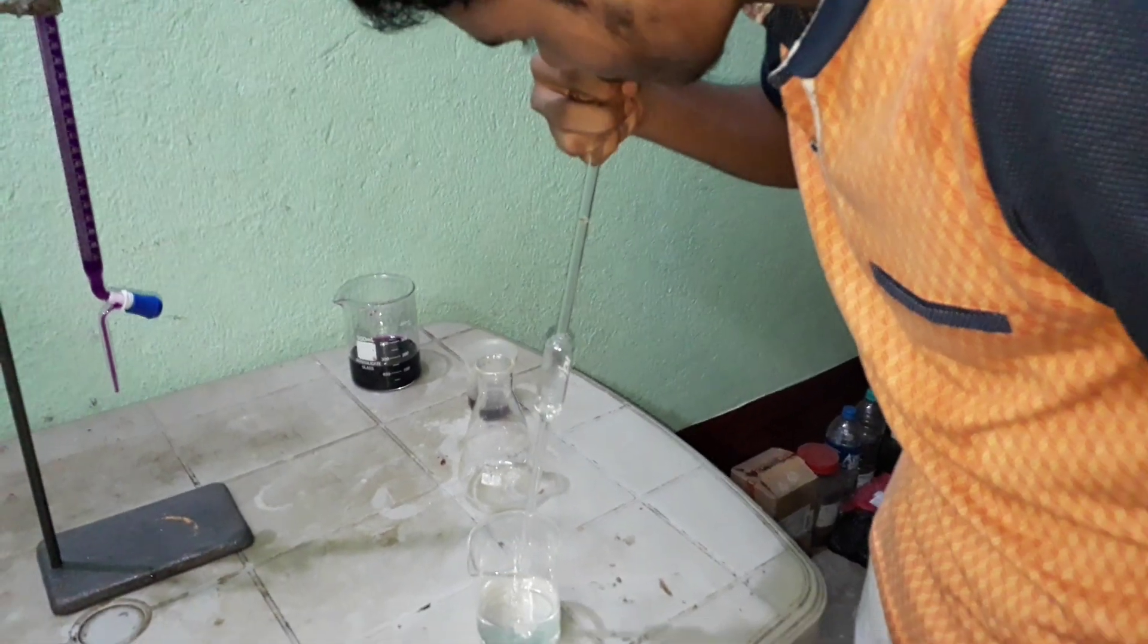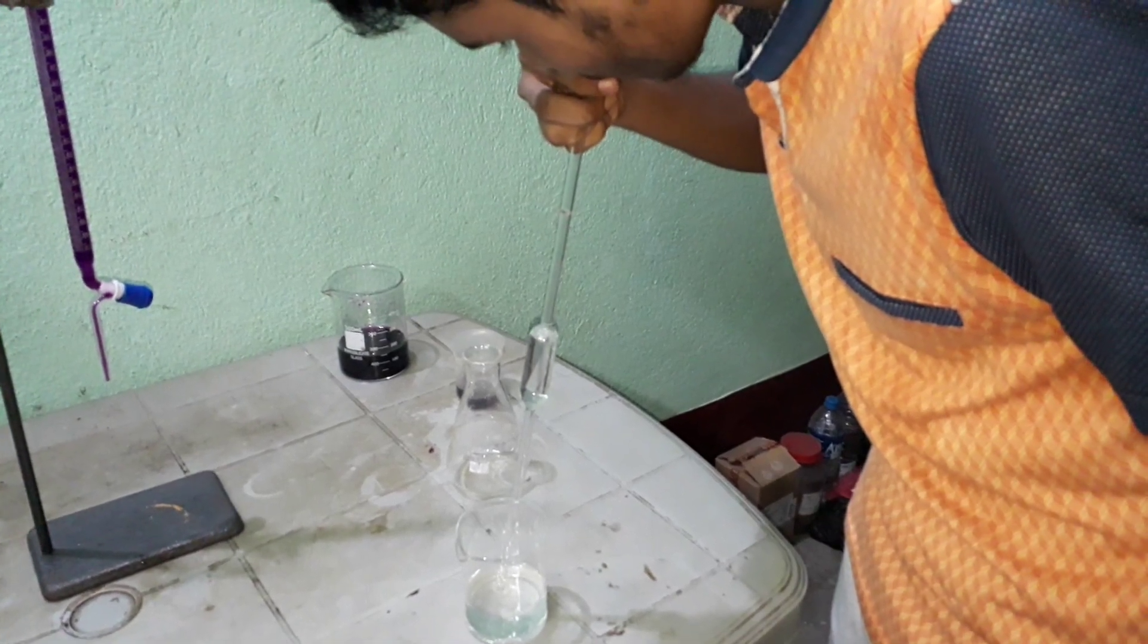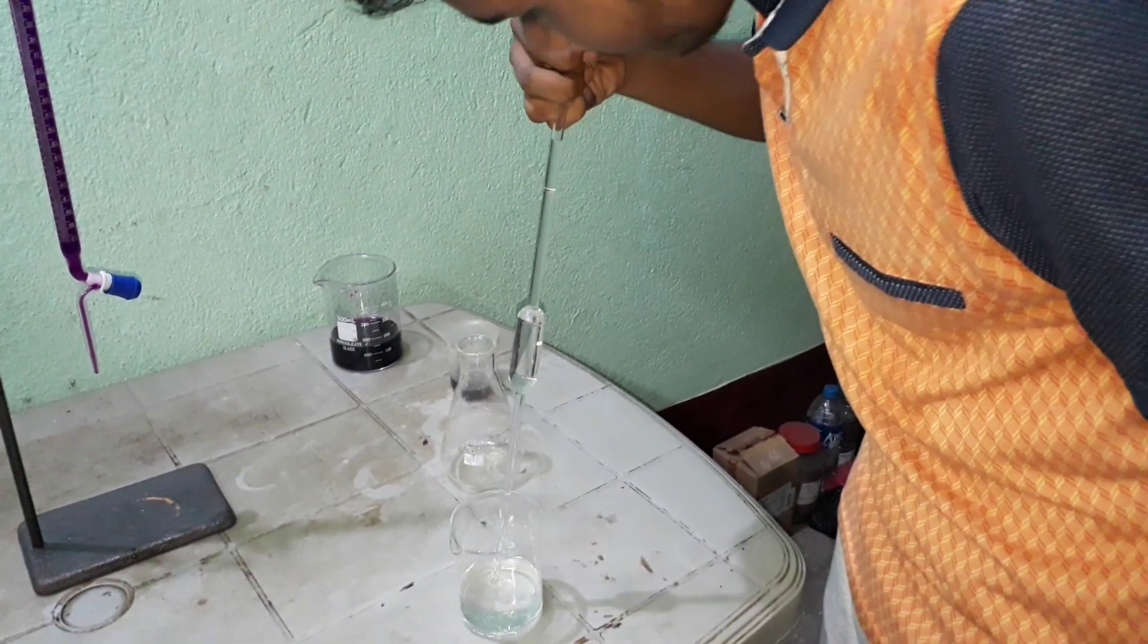At first, 25 ml 0.1 normal Mohr salt solution is pipetted in a conical or Erlenmeyer flask.